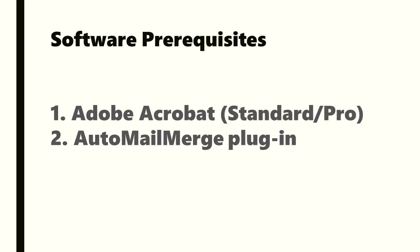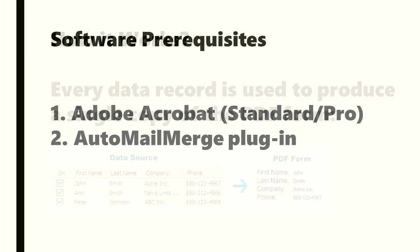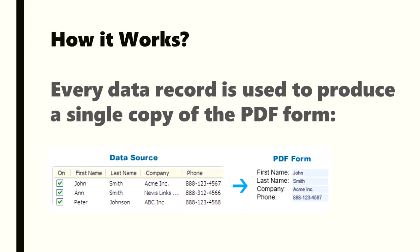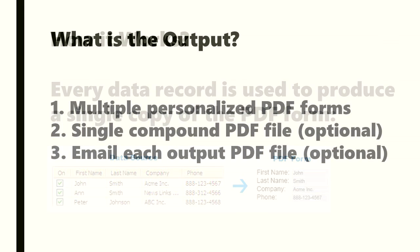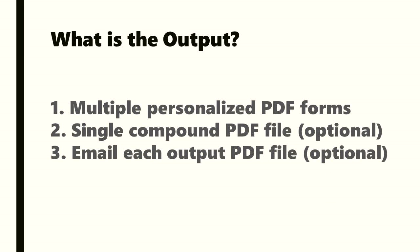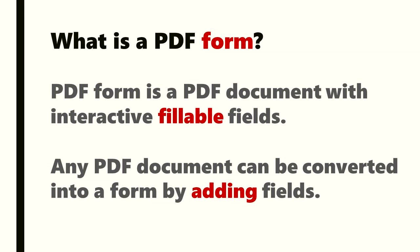Software prerequisites are Adobe Acrobat Standard or Pro installed on your computer and the AutoMail Merge plugin by Evermap. How it works: every data record is used to produce a single copy of the PDF form. AutoMail Merge generates multiple personalized PDF forms. A single compound PDF file can optionally be generated, and you can email the output PDF forms.